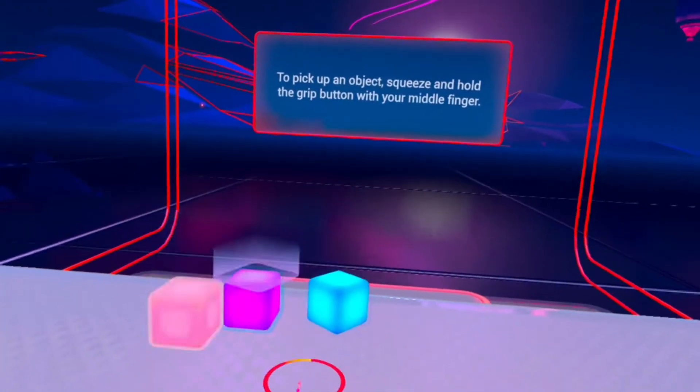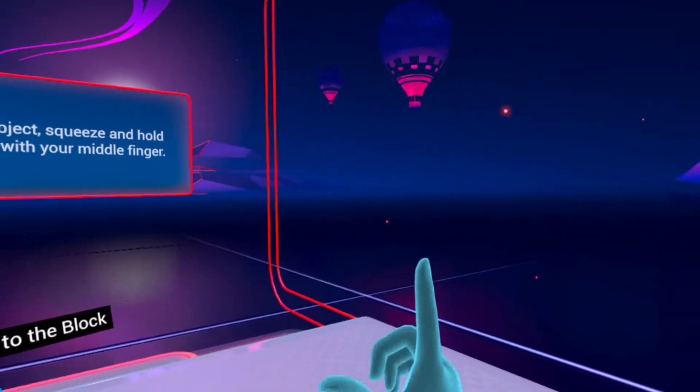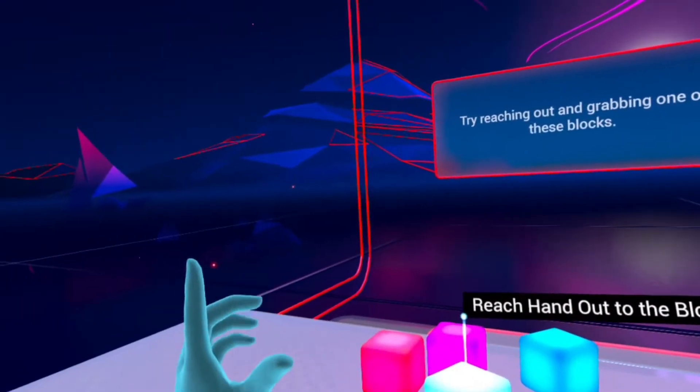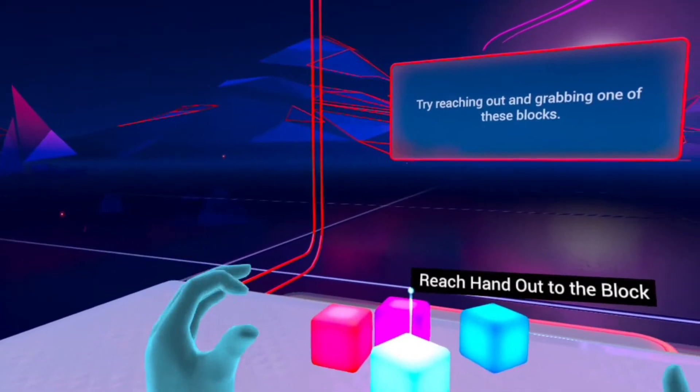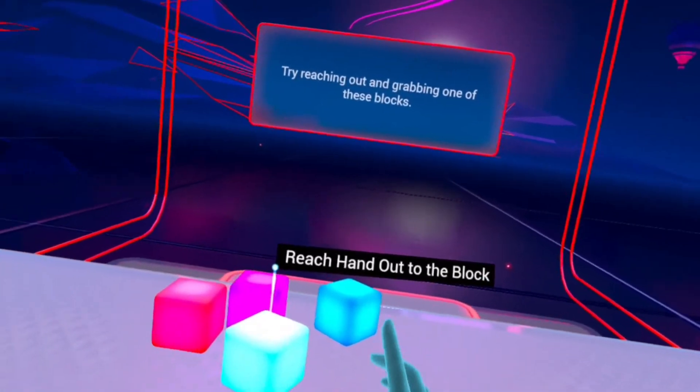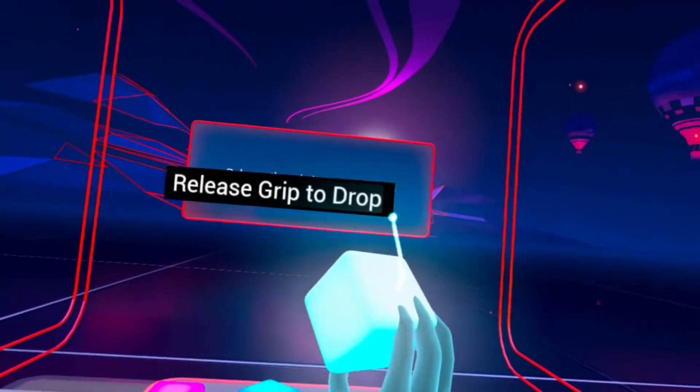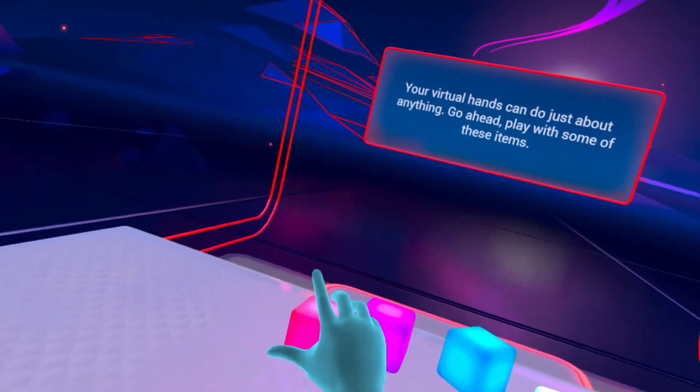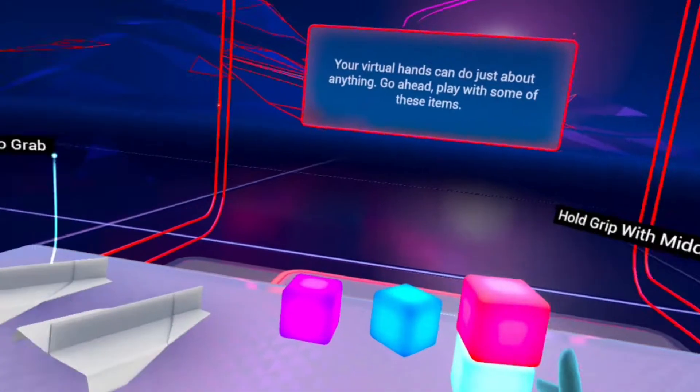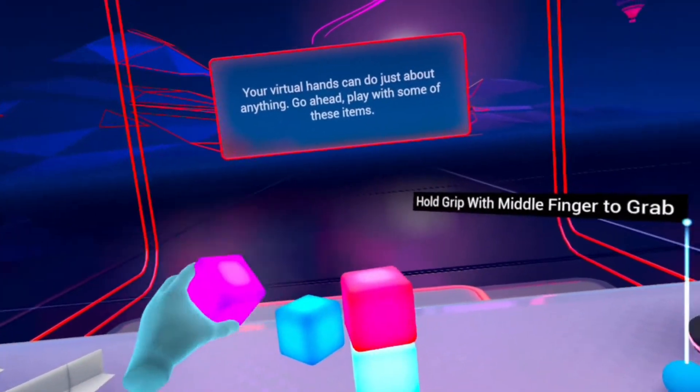To pick up an object, squeeze and hold the grip button. Try reaching out and grabbing one of these blocks. Release the grip button to drop it. Your virtual hands can do just about anything. Stack them like this. Go ahead, play with some of these items.